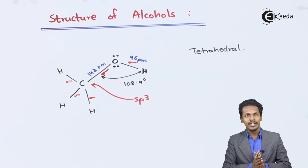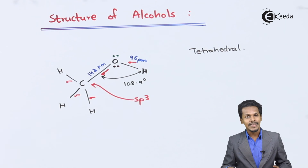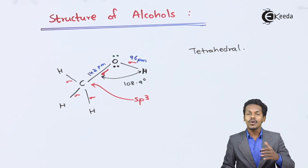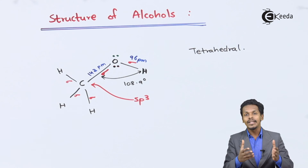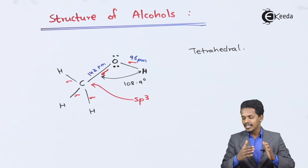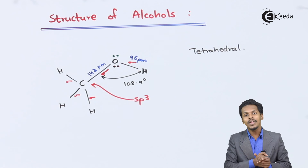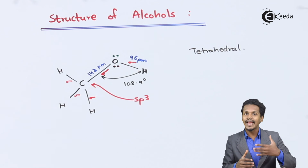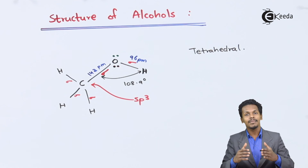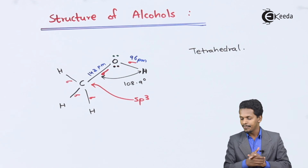The reason the bond angle is slightly less than the ideal tetrahedral geometry is because of the lone pair of electrons on the oxygen atom. Because of these lone pair electrons, there will be repulsion between the lone pair of electrons and the bonding pair, and that is how the bond angle actually reduces — but not too much.